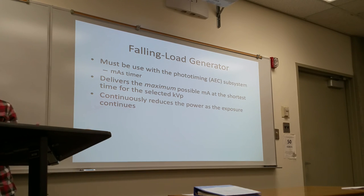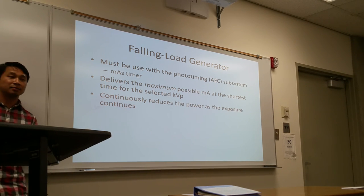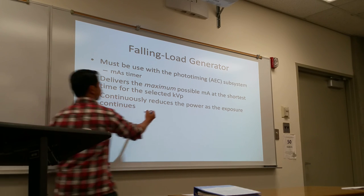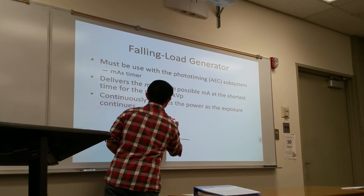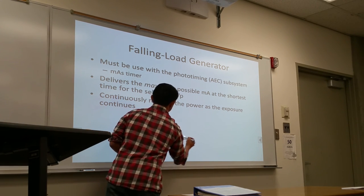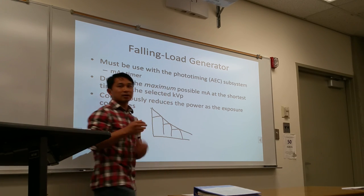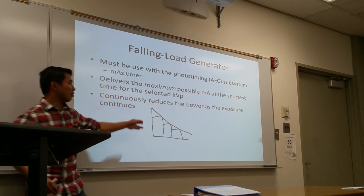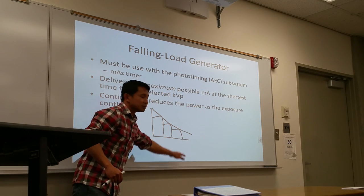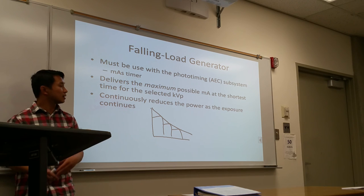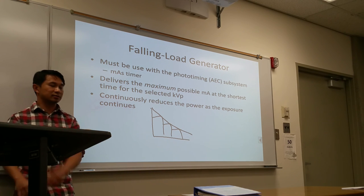One of the topics to talk about is the falling load generator — maximum MA with the shortest exposure time, whatever kV selection you have. It then continues to reduce power as the exposure continues. So instead of maintaining the highest MA, as the exposure continues, the MA station will change fluctuatingly based on your exposure. That's why the falling load generator's MA decreases as your time duration continues.